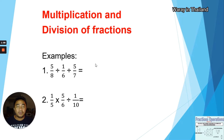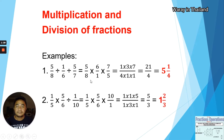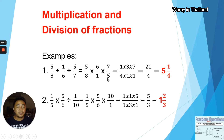So we start. Number one: five over eight divided by one over six, divided by five over seven. The first step, since we have division, is to change the operation from division to multiplication and get the reciprocal of the succeeding terms — one over six and five over seven. So from division we change to multiplication, one over six becomes six over one, and five over seven becomes seven over five.